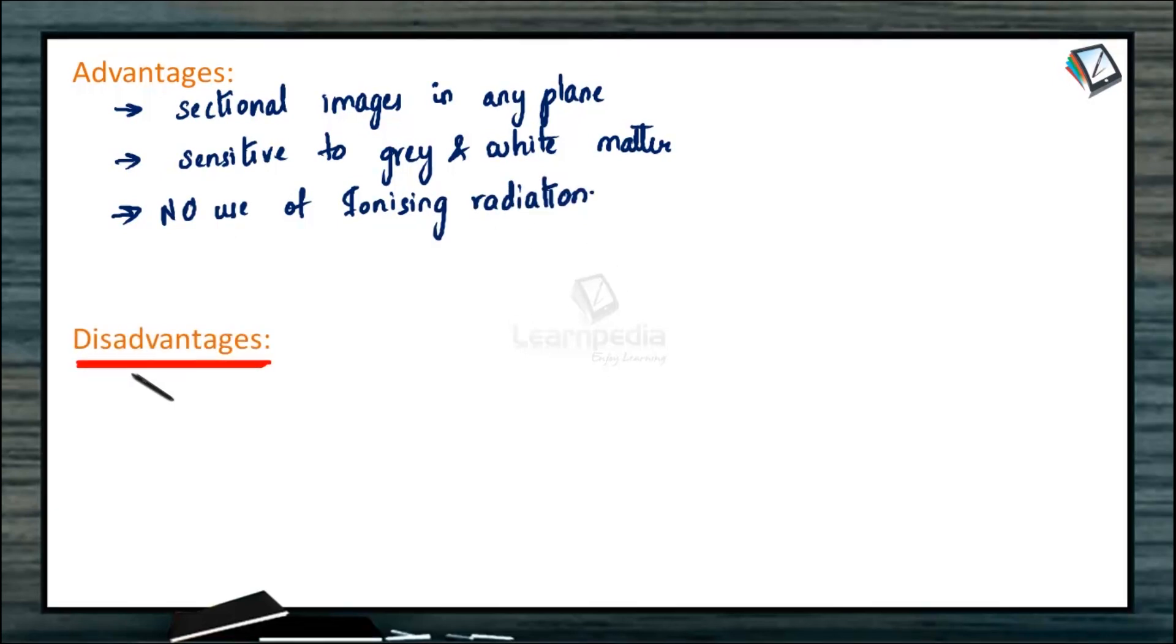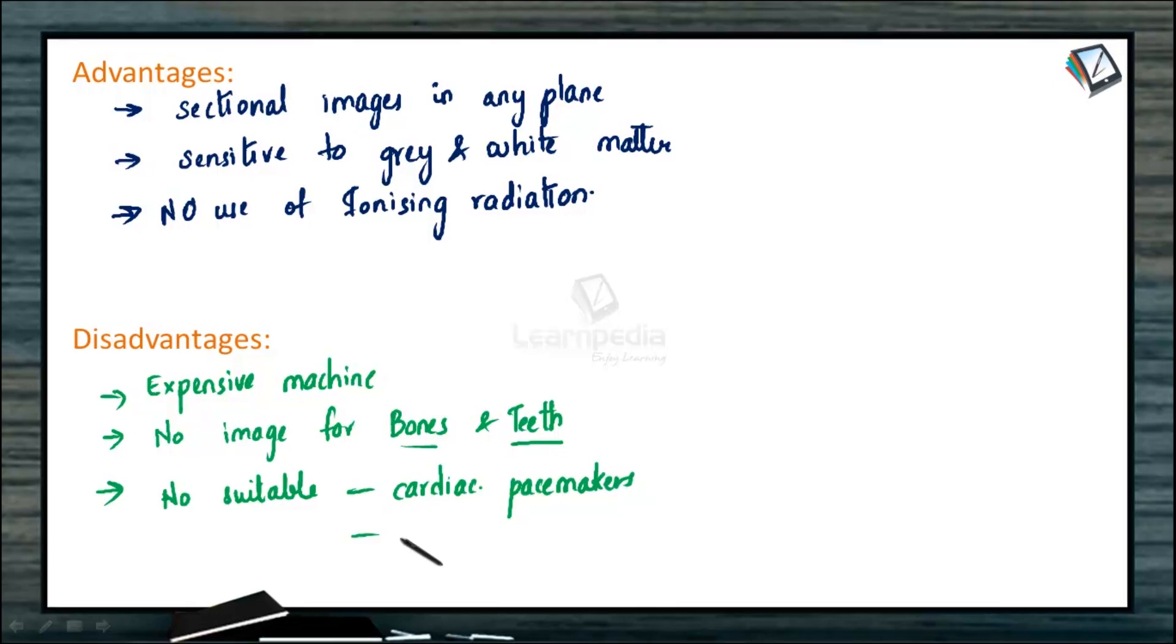Now let us see the disadvantages. It is an expensive machine. As I have mentioned, it helps differentiate the water rich and the water poor tissues. It is able to show us the contrast between tissues which have water content. So what about the tissues which do not have that much water? So no image for bones and teeth. We will not be able to detect any kind of problem that would be related to the bones and teeth. And since we use magnetic fields and radio waves, it is not suitable for patients who use cardiac pacemakers or any kind of implants. This MRI would actually interfere with the use of these instruments.